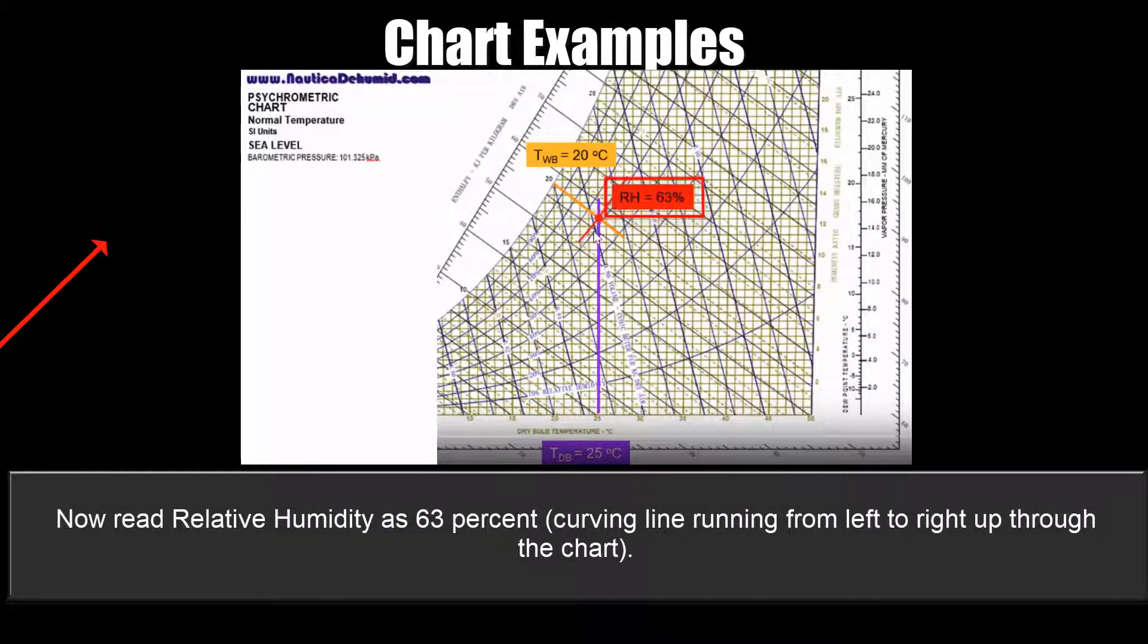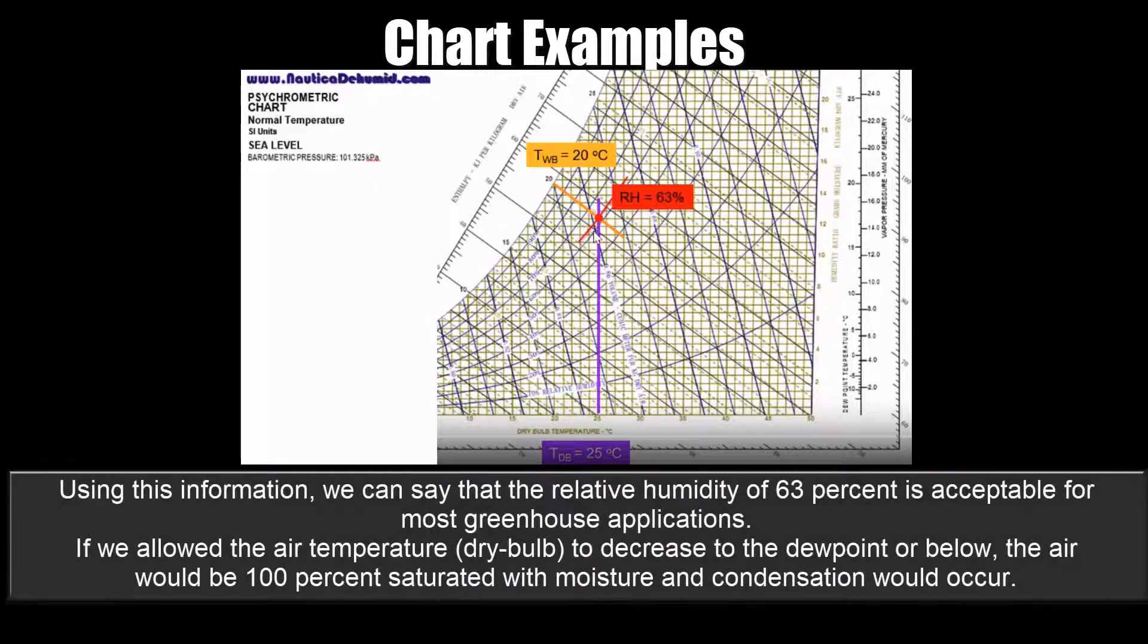Now read relative humidity as 63%, the curving line running from left to right up through the chart. Using this information, we can say that the relative humidity of 63% is acceptable for most greenhouse applications.